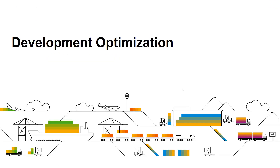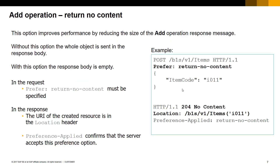Let's have a look at some development optimization tips, starting with the add operation return no content option. The response body from a basic add operation contains the full set of properties of the relevant entity that was added. Depending on the number of properties of the specific entity plus the network latency, performances can be impacted.